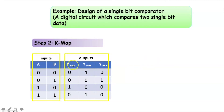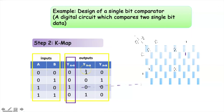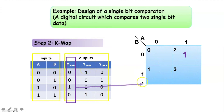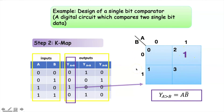Let us represent the first output column in terms of the inputs in a K-map. This is the K-map representation of this column in terms of the inputs. Here we have only one term in this K-map, so we can easily write the expression for this column. This is the final expression for this column.